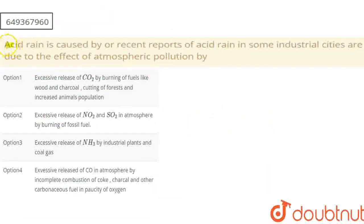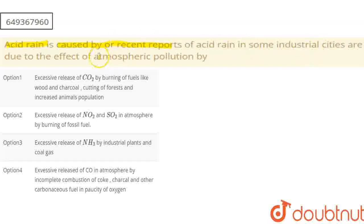Hello students. The question is: recent reports of acid rain in some industrial cities are due to the effect of atmospheric pollution. What is the effect of atmospheric pollution — by which of the following?